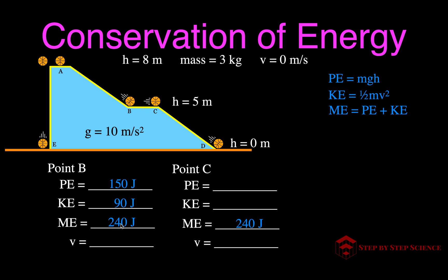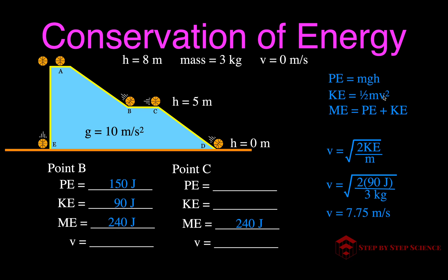Now we want to figure out the velocity. We rearrange the kinetic energy equation to solve for velocity: multiply both sides by 2, divide by the mass, and take the square root. The velocity equals the square root of 2 times the kinetic energy divided by the mass. Plugging in our numbers: the square root of 2 times 90 divided by 3 gives a velocity of 7.75 meters per second at point B.